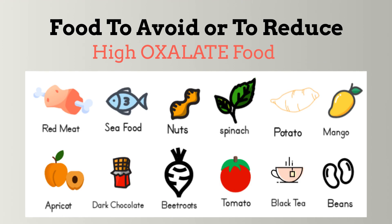Since 60 to 80 percent of kidney stones are formed as calcium oxalate, it is very important to pay attention to what we eat. If you have been diagnosed with calcium oxalate kidney stones, it is very important to avoid or reduce foods that are high in oxalate. Foods to avoid include red meat, seafood, nuts, spinach, potato, sweet potato, mango, apricot, dark chocolate, beetroots, tomato, black tea, and beans.